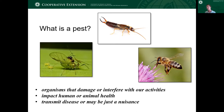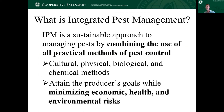Pests might be organisms that have an impact on human health or animal health, and often they might transmit disease or could just be a nuisance. So integrated pest management is a sustainable approach to managing pests by combining the use of all the practical methods of pest control available to us. This includes cultural, physical, biological, and chemical methods. The idea is really to attain our goal as producers, minimizing economic, health, and environmental risks at the same time.